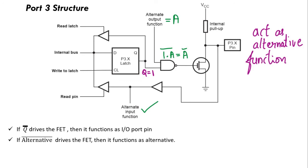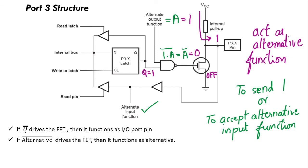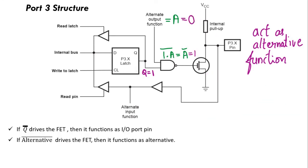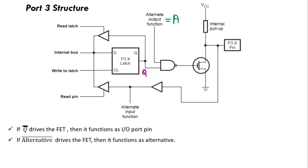If you want to use the alternative input function: assume A equals 1, so A bar equals 0. The FET turns off, so ground is not connected. The pin will get VCC through the internal pull-up — this is used to send 1 or to accept the alternative input function in alternative mode. Similarly, if A equals 0, A bar equals 1, meaning the FET turns on. Ground connects to the pin, and this can be used to send 0 through that pin. To use the port as input-output, where Q bar drives the FET, you should make A equal to 1.